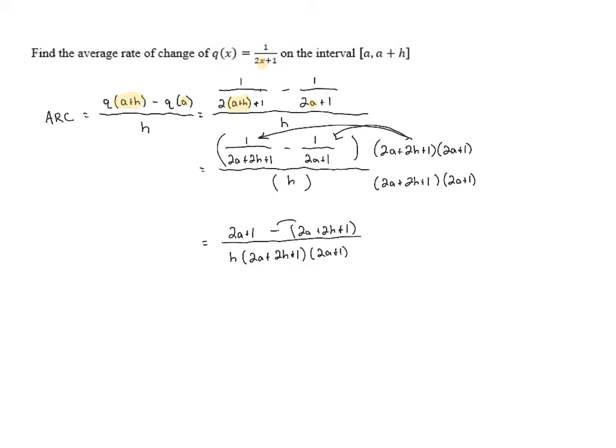Now, when we distribute the subtraction in the numerator, this is going to give us 2a plus 1 minus 2a minus 2h minus 1 all over h times 2a plus 2h plus 1 times 2a plus 1. And we've got some canceling that we can do.